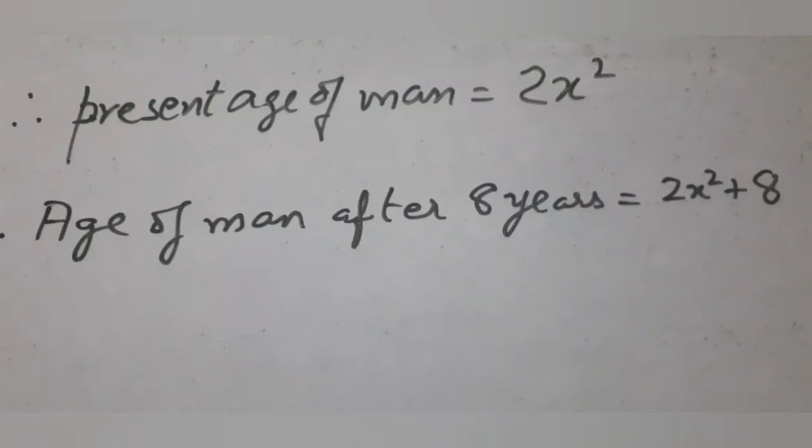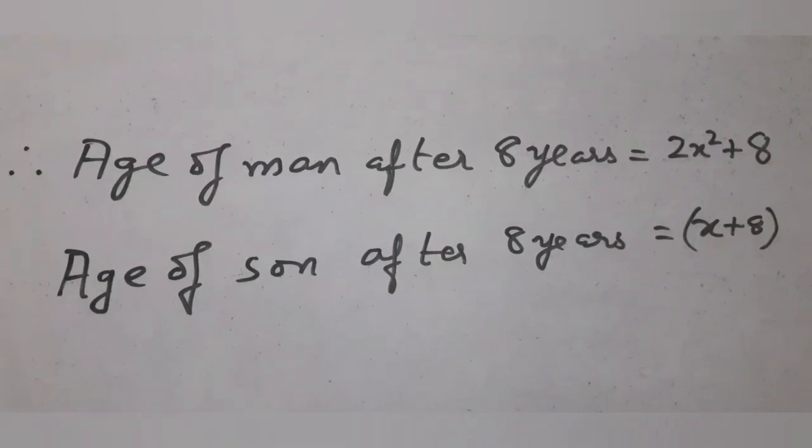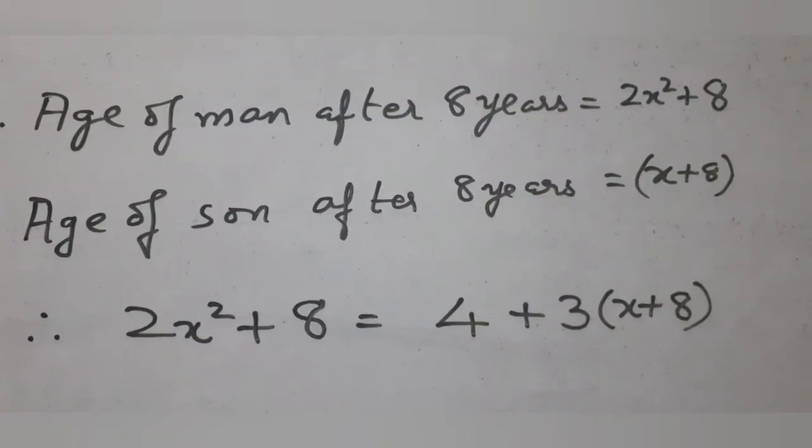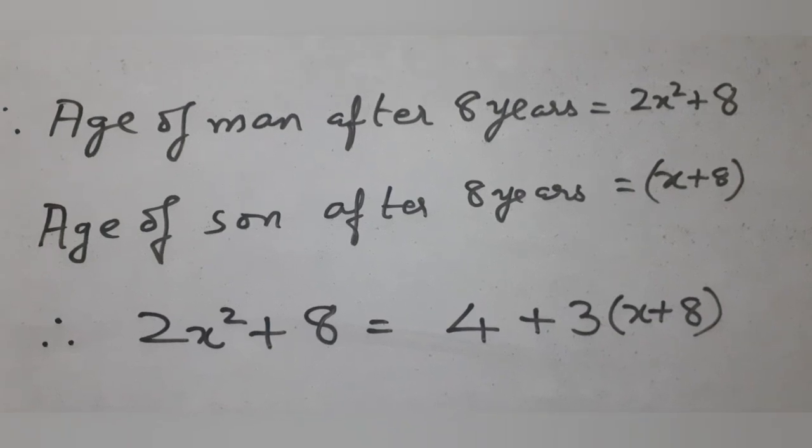Now we look at their ages after 8 years. Using the second condition, we can say that 2x square plus 8 equal to 4 plus 3 times x plus 8.